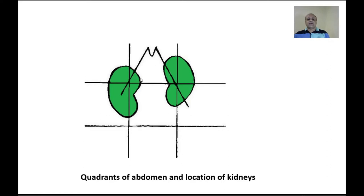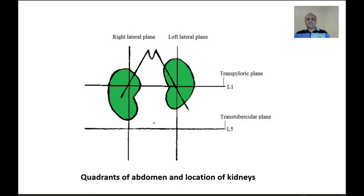The kidneys are located in the epigastrium, the right and left hypochondrium, the right and left lumbar regions, and the umbilical region. One can appreciate that one kidney is lower compared to the other, and that is due to the presence of the liver on the right side. This is the costal margin and this is the xiphoid process. This figure shows you the quadrants of the abdomen and the location of the kidneys.